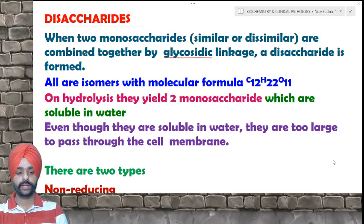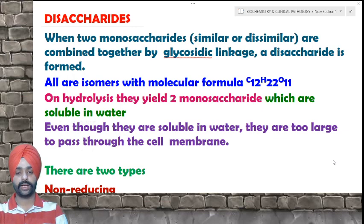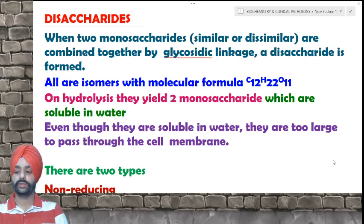Welcome students. In our previous class we had discussed about the properties of monosaccharides and some physiologically important monosaccharides. In today's class we shall be discussing about what are disaccharides, how they are formed, and their examples.